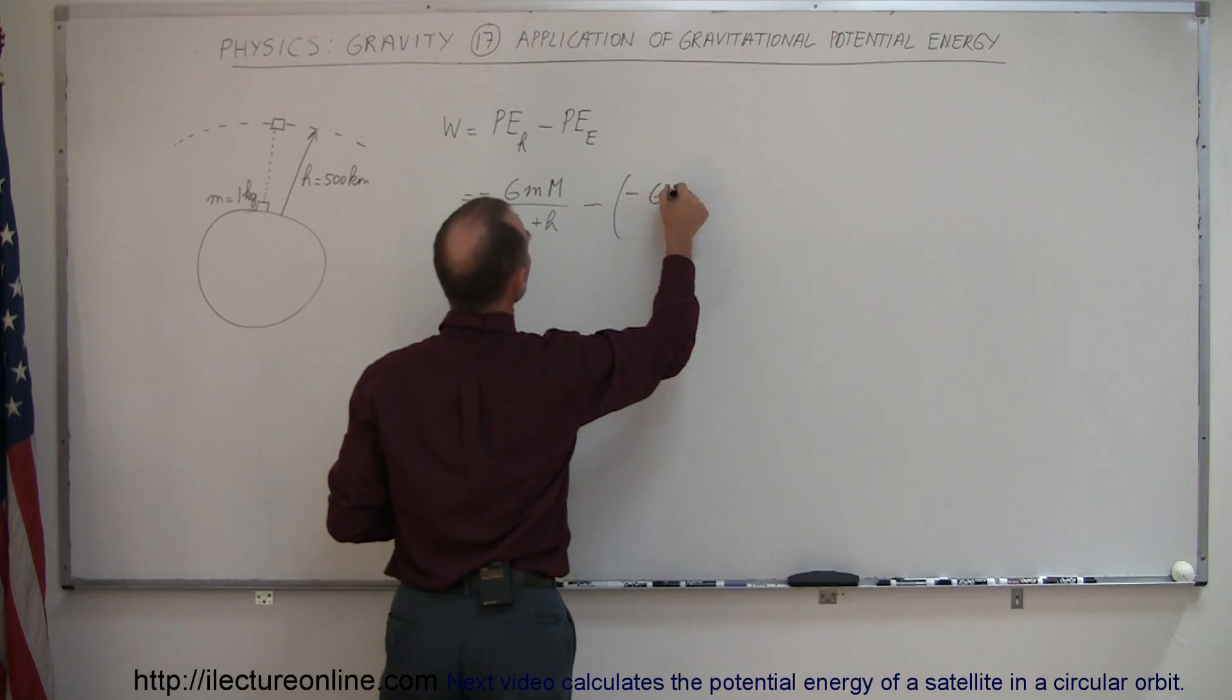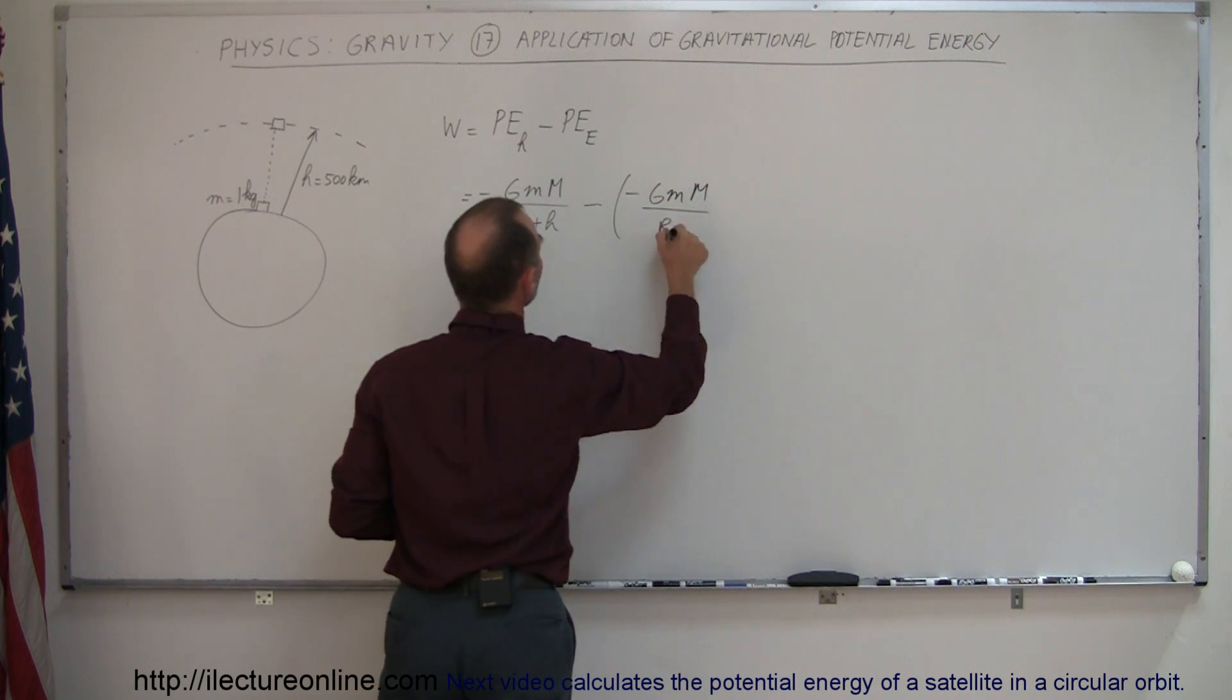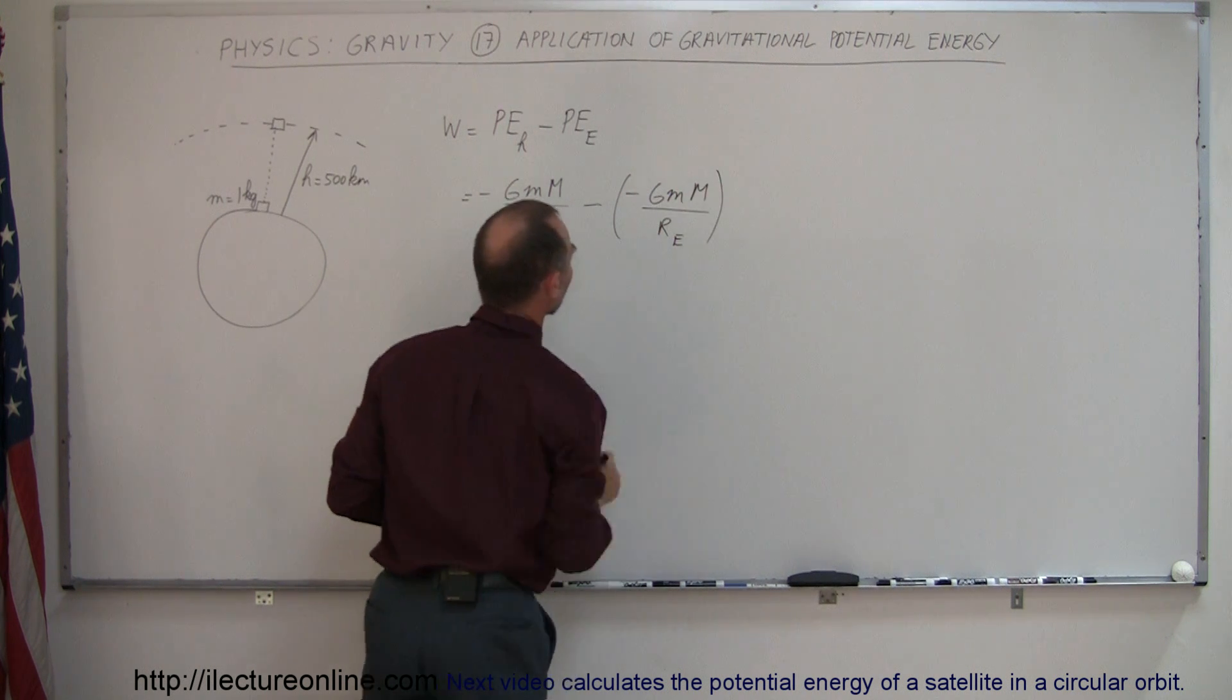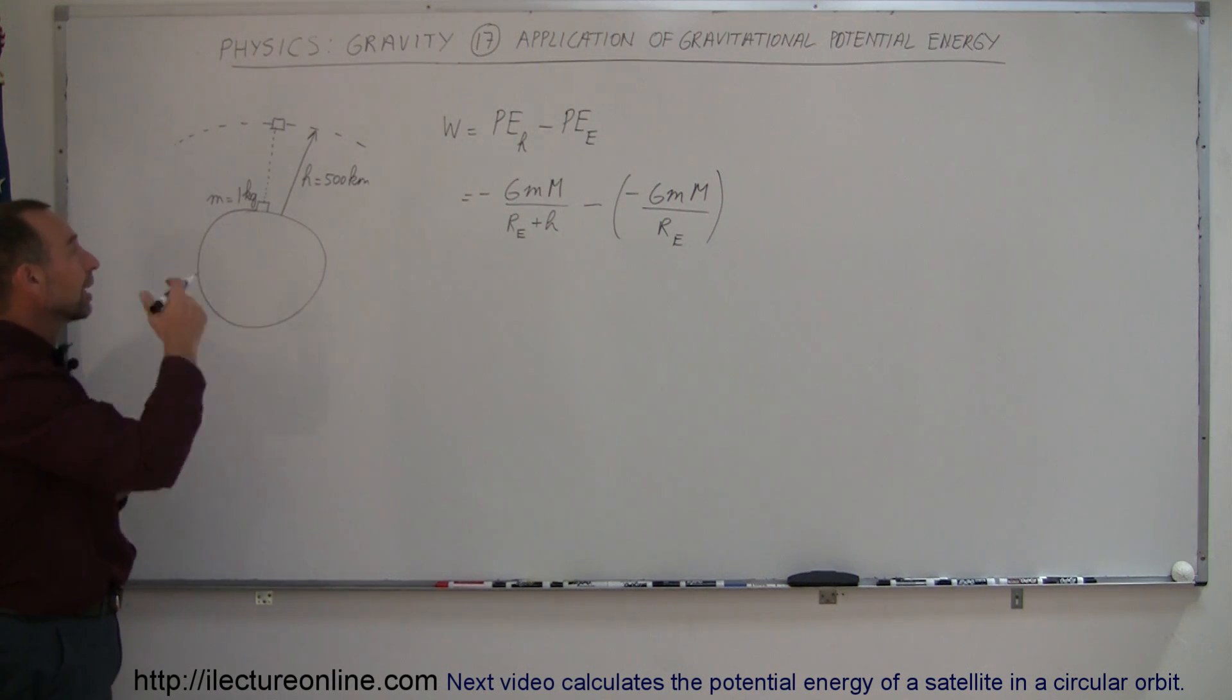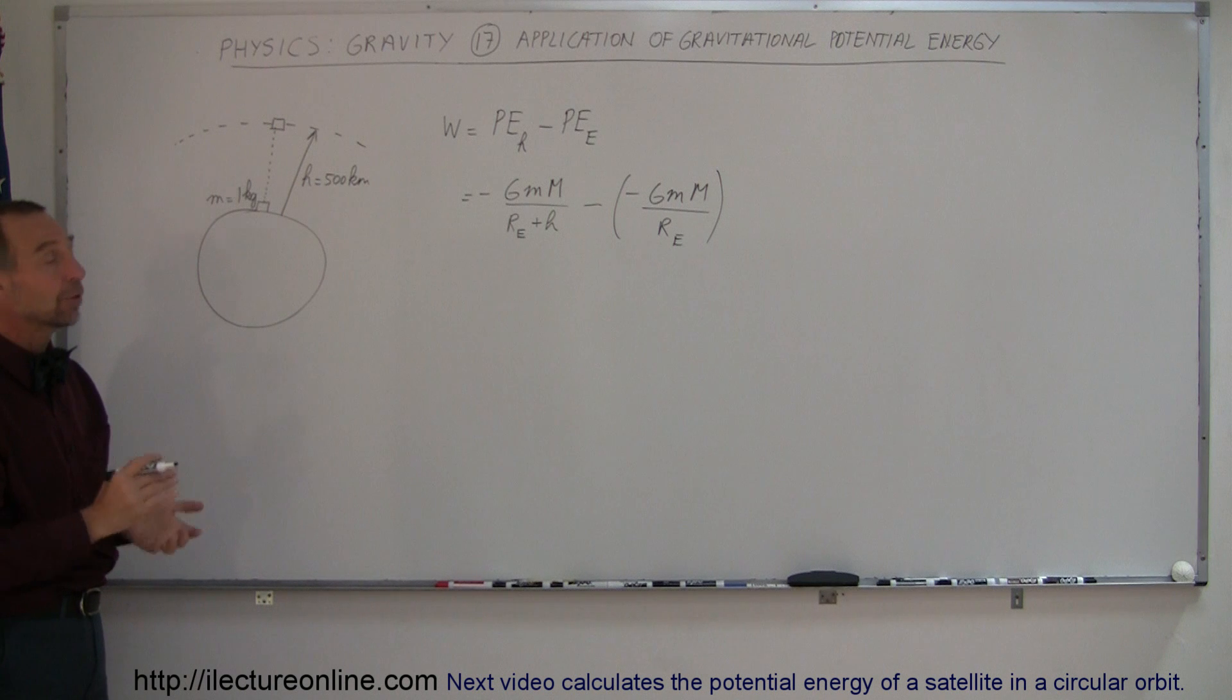So we subtract from that the minus GmM divided by the radius of the Earth. Okay, that difference should be the work required to put that object in space. Now all we have to do is figure out what those are.